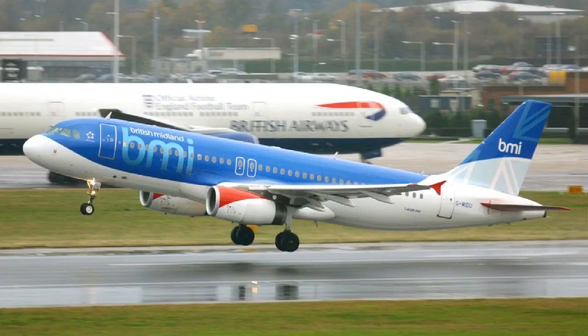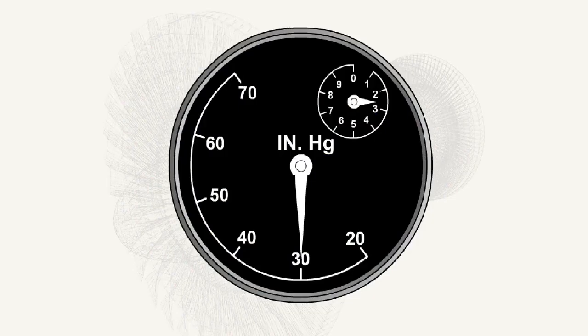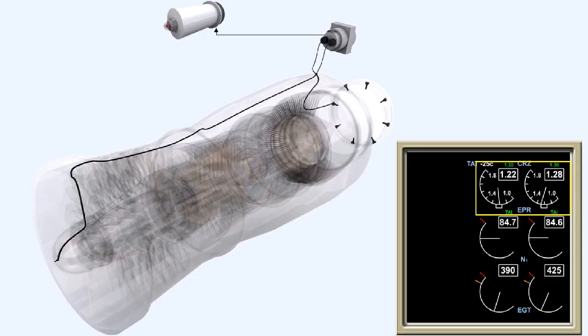Thrust measuring instruments are of two basic types: the type that measures the jet pipe pressure, the P7 gauge, and the type that measures the ratio of two parameters, the jet pipe pressure and the engine air intake pressure, the EPA gauge.